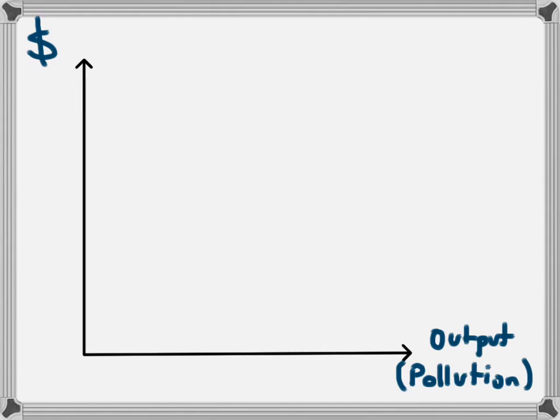We're going to use this model to look at the idea of a carbon tax and how a carbon tax can lead to a better outcome for an economy. There are two axes: on the vertical axis we're going to use dollars, representing costs, benefits, and the tax level. On the horizontal axis we have output, which is also tied to pollution, because the greater the amount of output produced, the greater the amount of pollution produced.